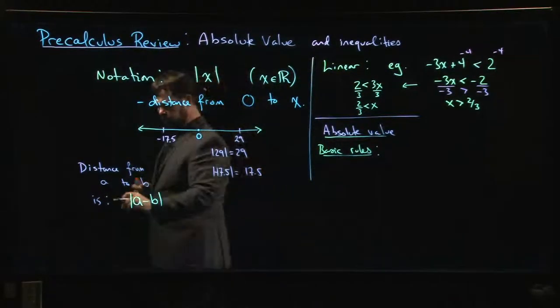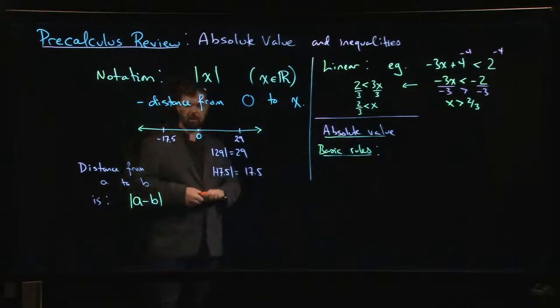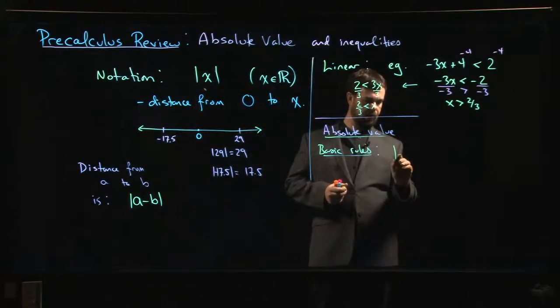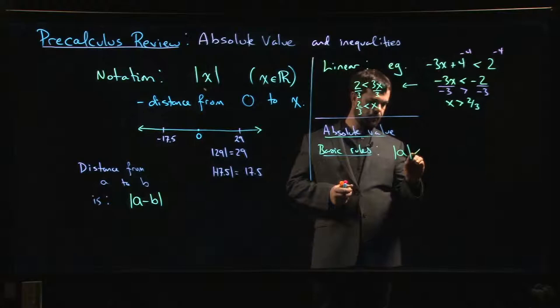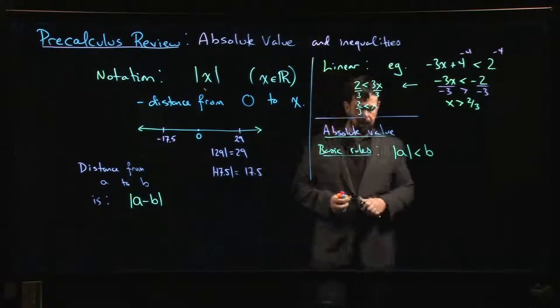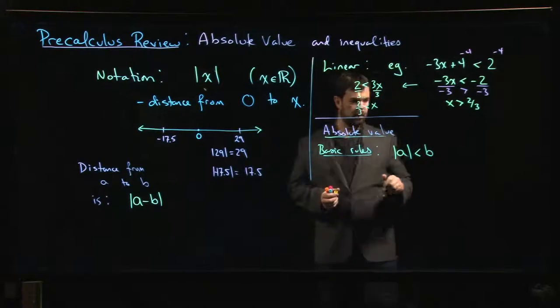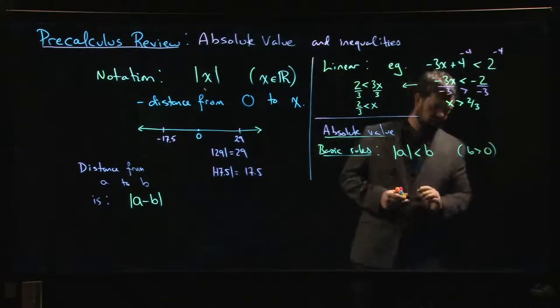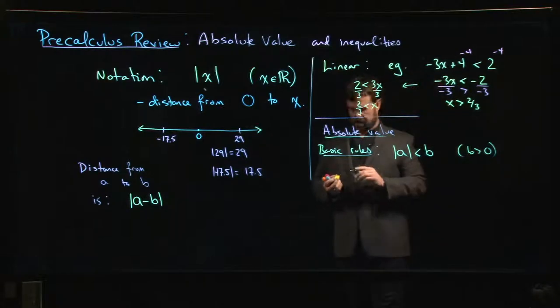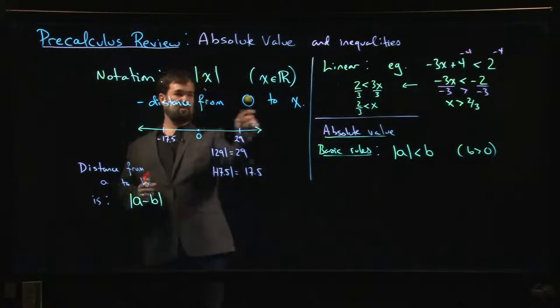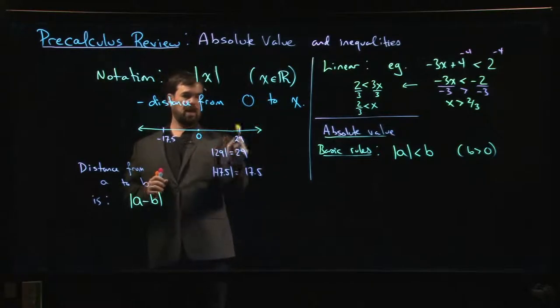And remember that we're thinking of absolute value in terms of distance. So if I say that absolute value of a is less than b, where b here is a positive real number. What does that mean? Well, remember that absolute value is distance from 0 to x.